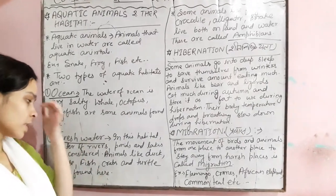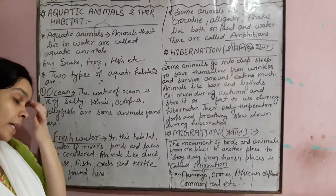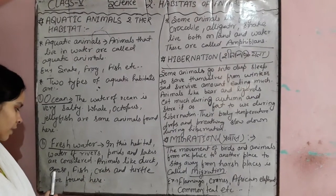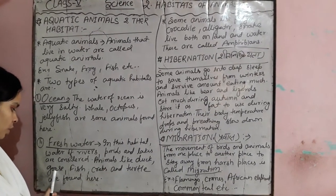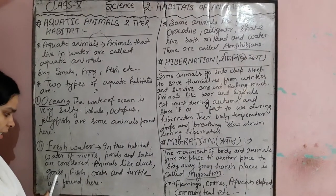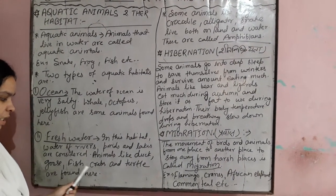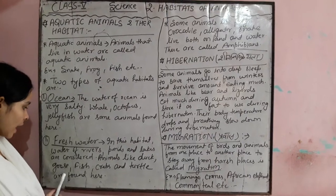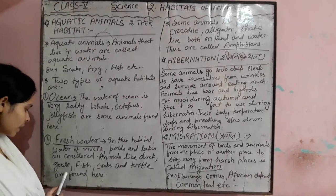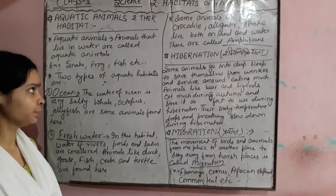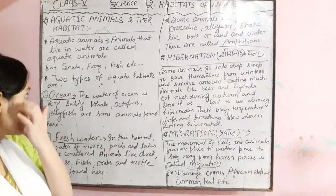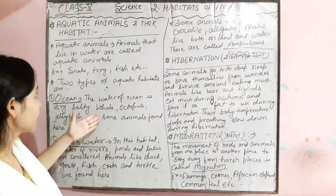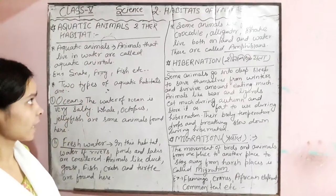Animals which live in fresh water habitats include ducks, frogs, fish, crabs, turtles (kachua), etc. These are the two aquatic habitat types and their examples.